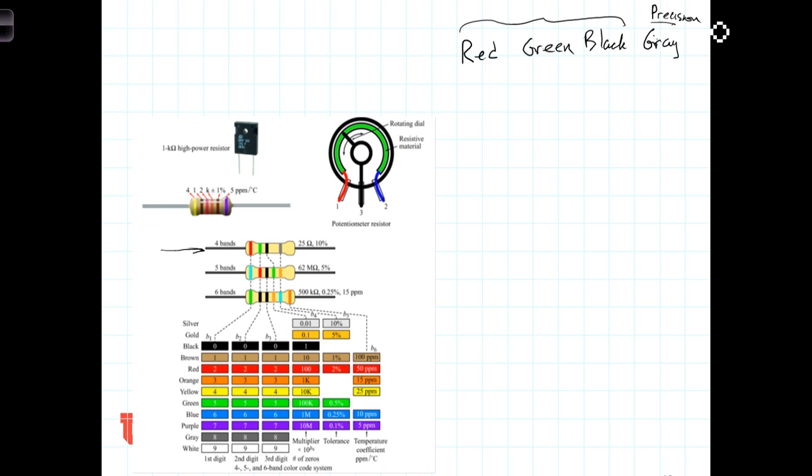Red represents the digit two. Green represents the digit five. And black represents the digit zero. When there's three stripes together like this, the first two represent the significant digits. And the third represents the number of zeros following it. So in this case, we have two, five.